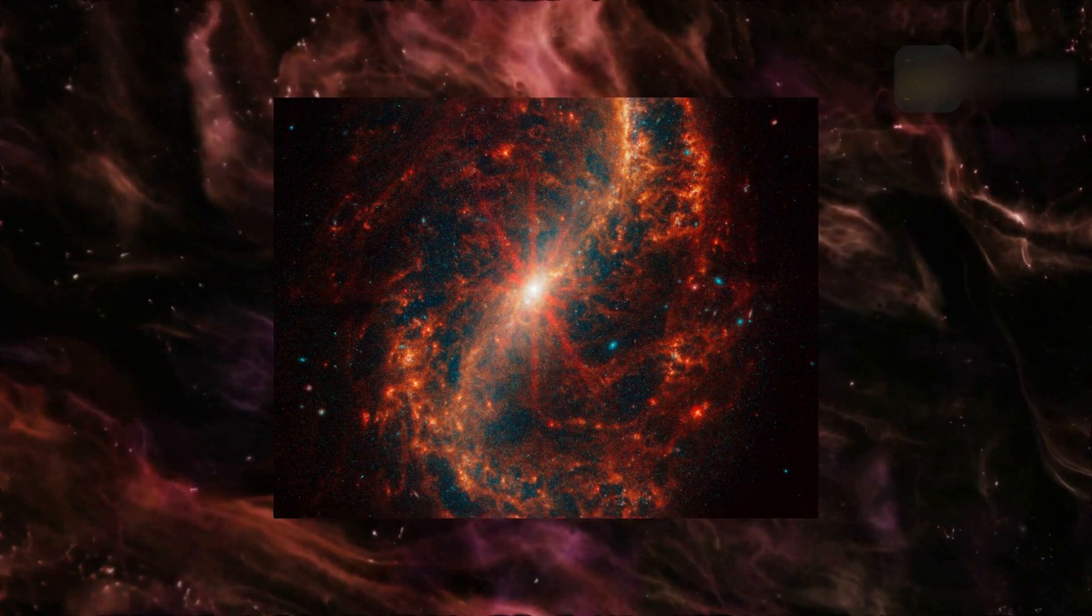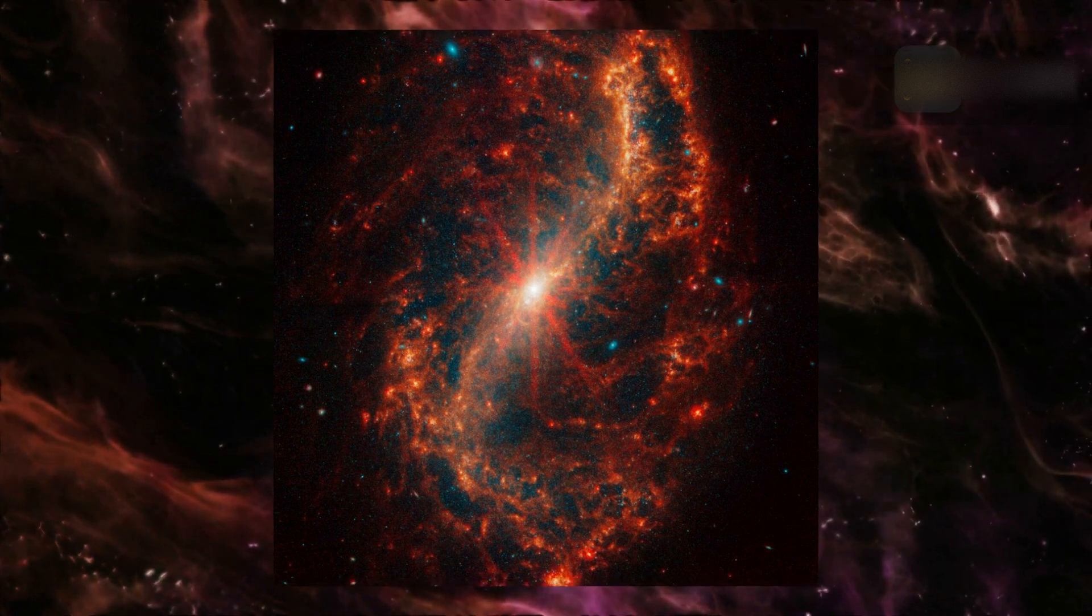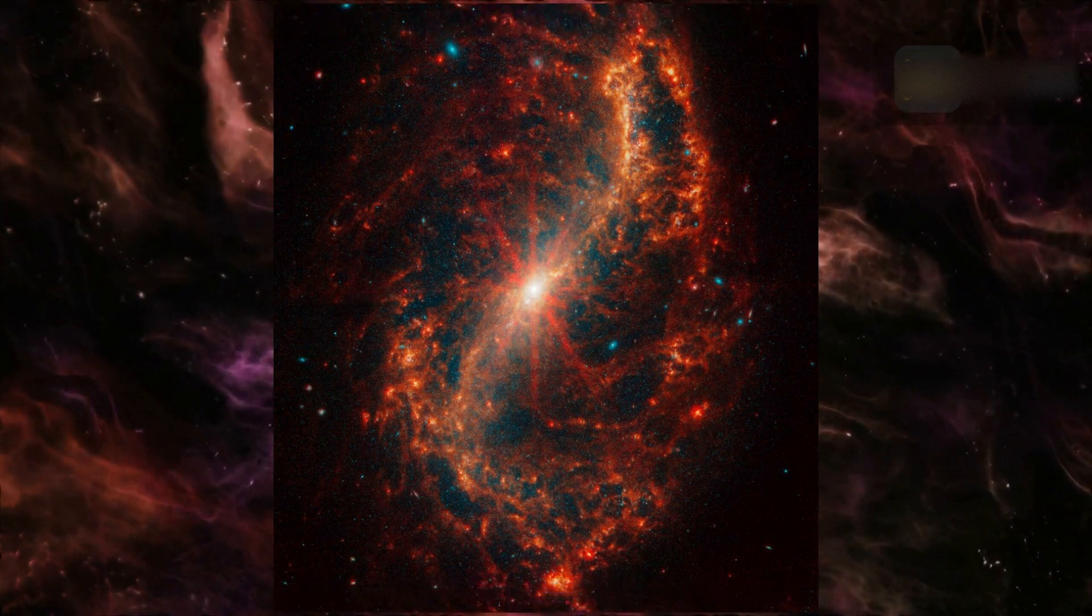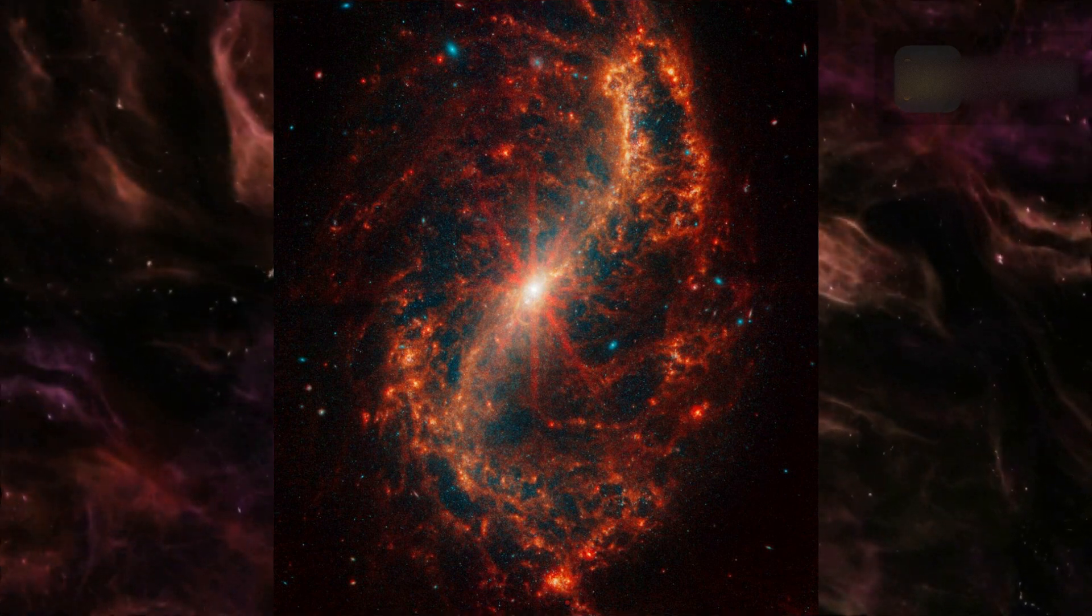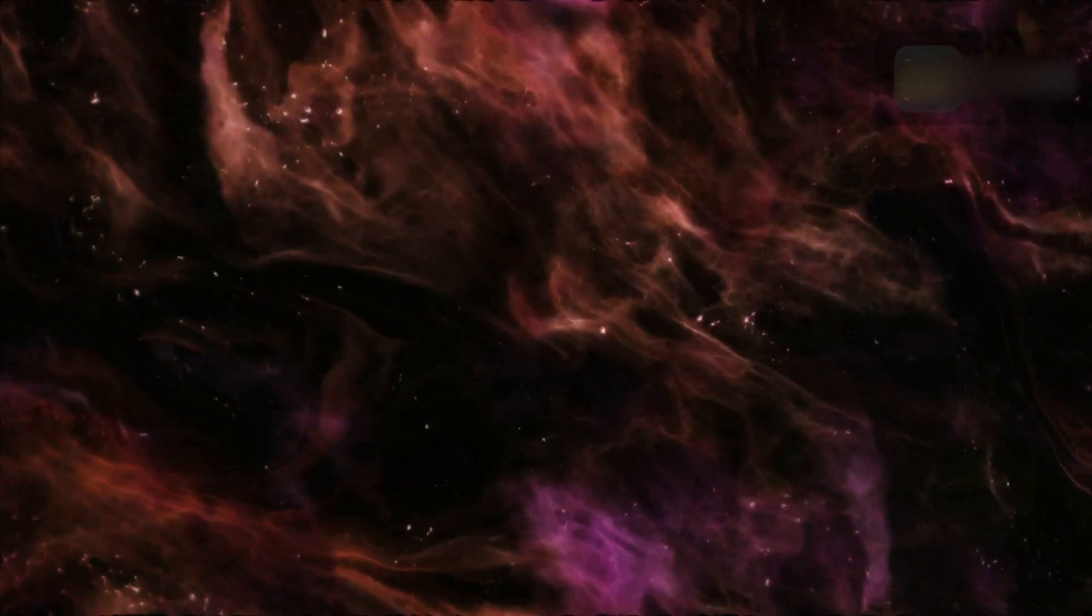These structures tend to follow the same pattern in certain parts of the galaxies. We think of these like waves, and their spacing tells us a lot about how a galaxy distributes its gas and dust. Study of these structures will provide key insights about how galaxies build, maintain, and shut off star formation.